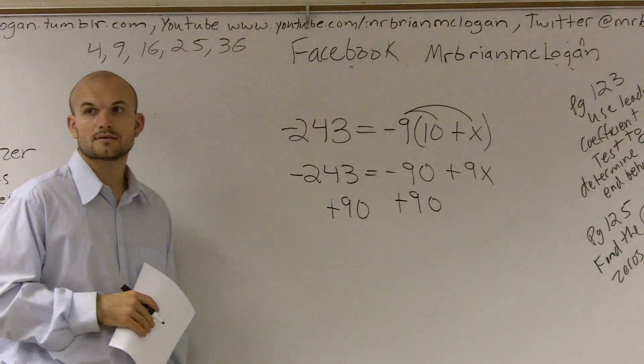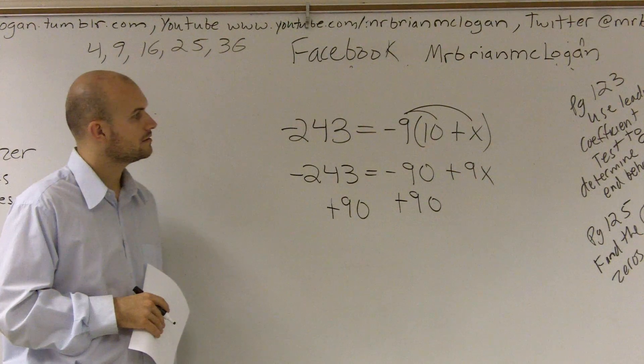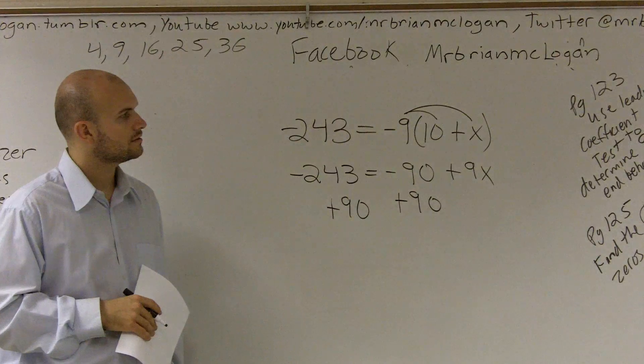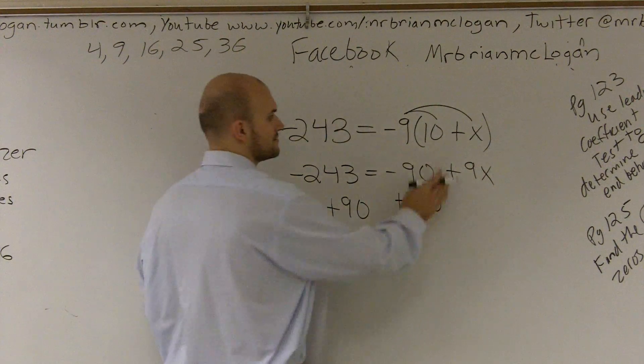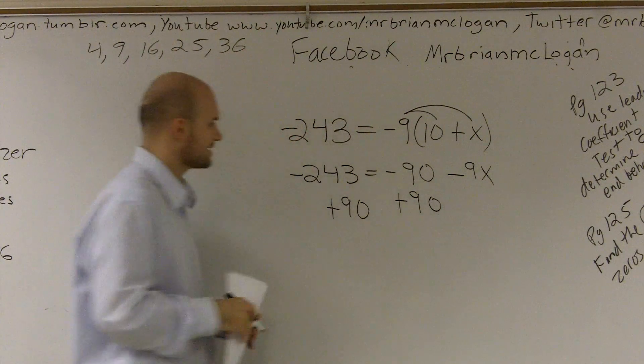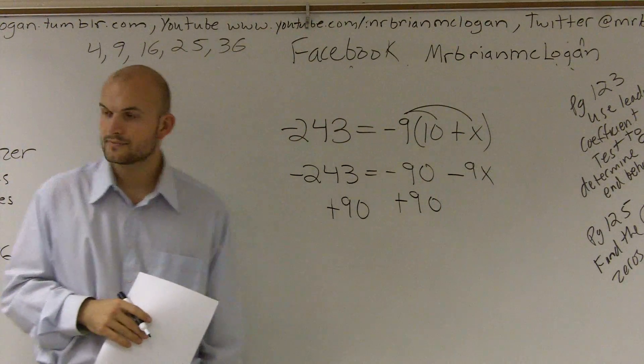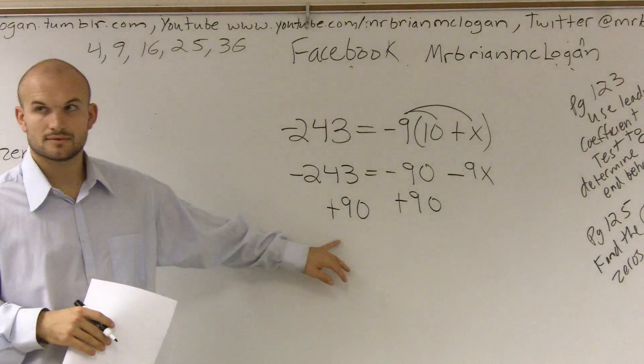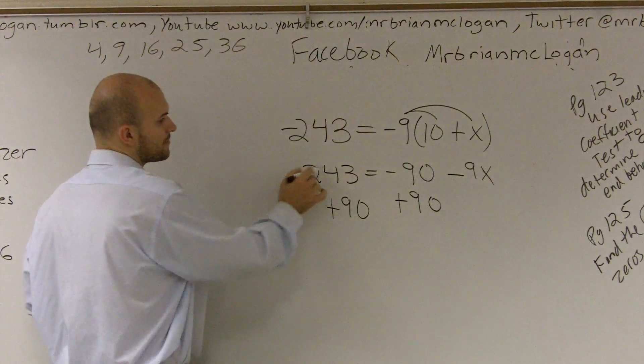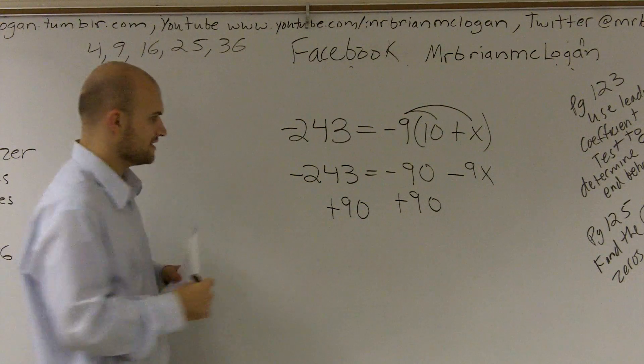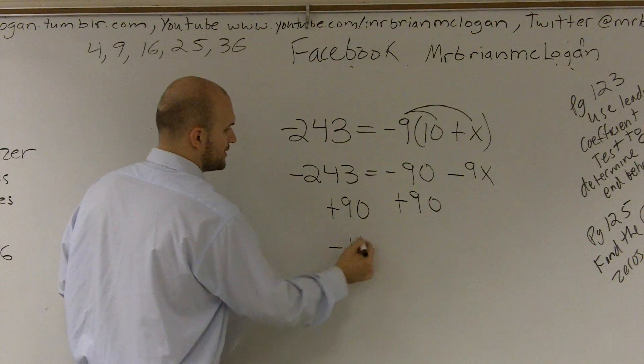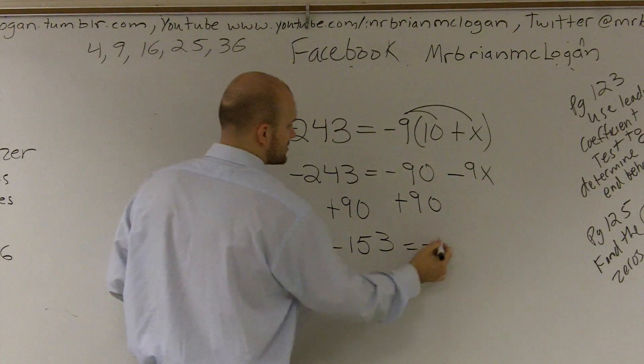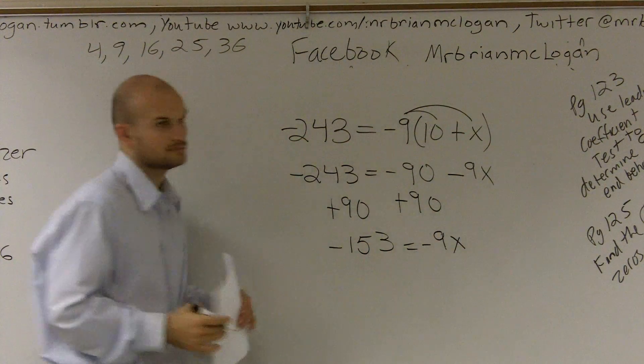Then I'm going to add... negative 9 times positive x would be minus 9x. Yes, it would be a positive minus 9x. Thank you. Minus 9x. Okay? Then we're going to say this becomes negative 243 plus 90 is a negative 153 equals a negative 9x. Right?